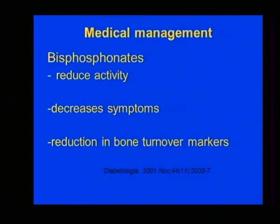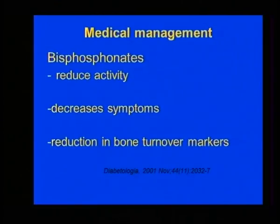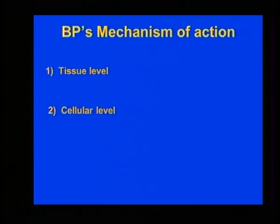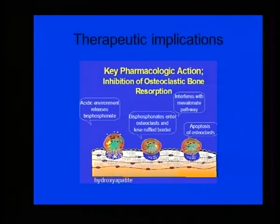Bisphosphonates are very important because they reduce the initial destructive phase time, which can help in healing. One of the most commonly used is zoledronic acid, which has to be given at 4 mg. You have to do a renal profile and then adjust the dose. There is a study from PGI showing it can be given and repeated after six months, which can heal the Charcot faster. The mechanism is that bisphosphonates work at the cellular level, causing apoptosis of the osteoclasts and reducing the initial phase of destruction.